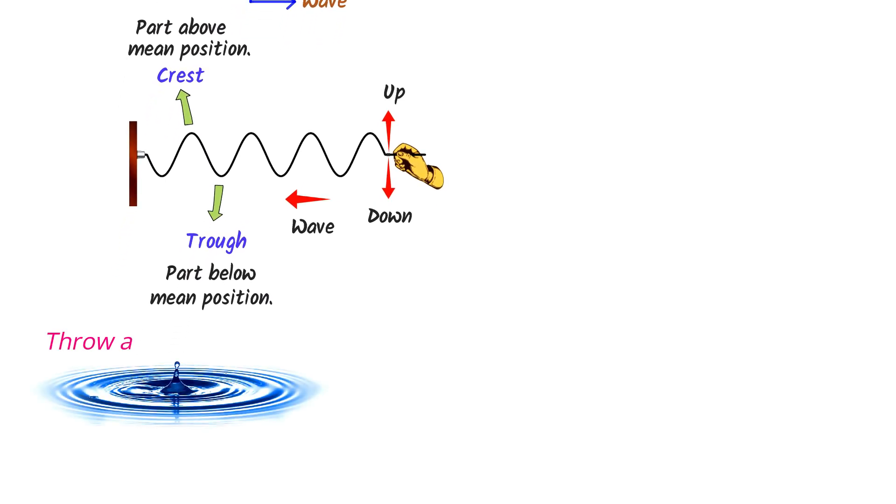For example, when you throw a stone into the water, the water ripples represent the movement of transverse waves. Some other examples of transverse waves are light waves, x-rays, radio waves, etc.